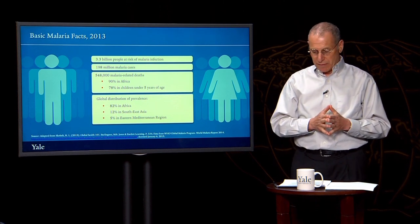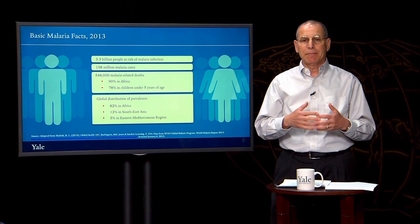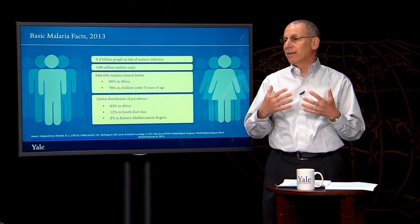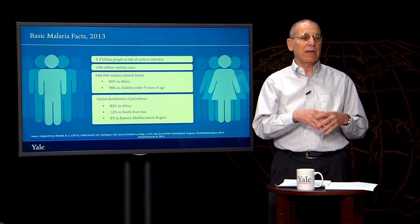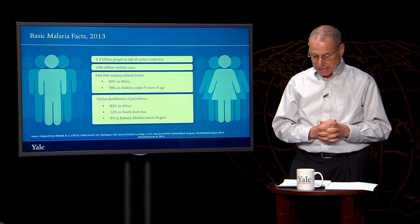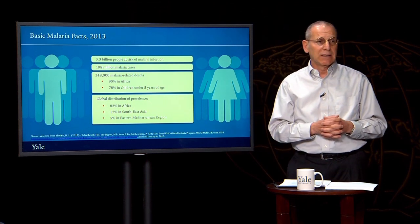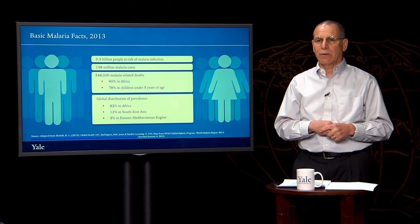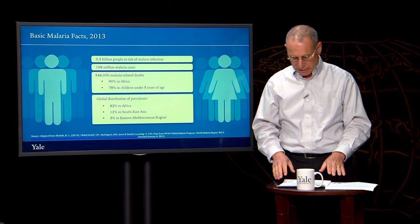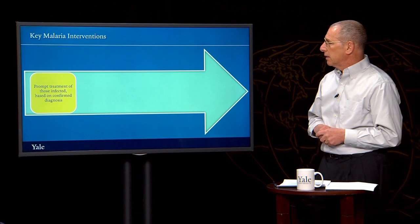Despite many years of effort, there is still no vaccine against malaria that is approved and in use. There's a lot of work going on in the development of a vaccine, but there's no vaccine yet approved, in use, or licensed in any country. However, there is widespread agreement on the key interventions that should be taken to address malaria, and there's been really important progress in the last decade or so in disseminating these interventions more widely and reducing the burden. Let's look at what these key malaria interventions consist of.